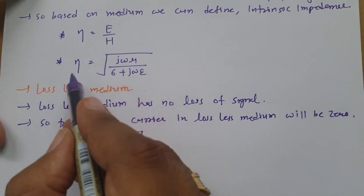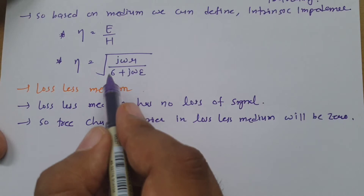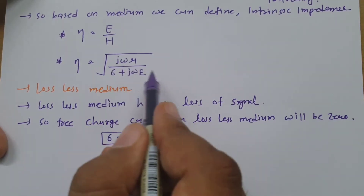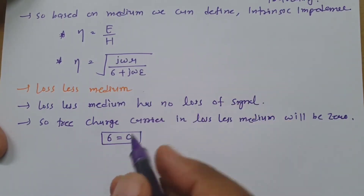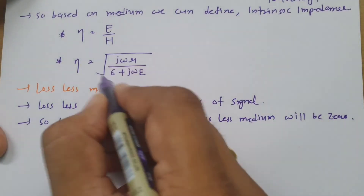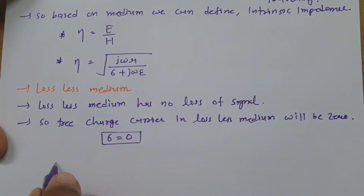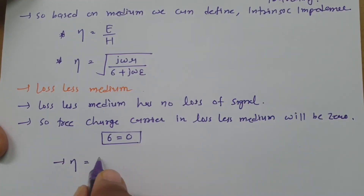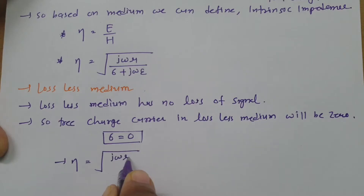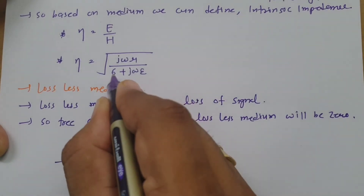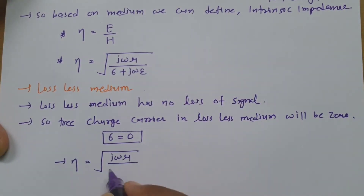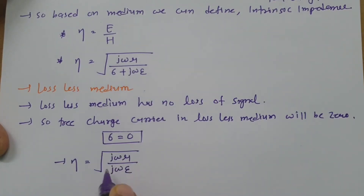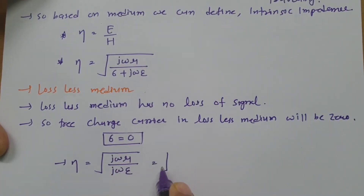Since intrinsic impedance equals the square root of j·omega·mu divided by (sigma + j·omega·epsilon), if we place sigma equal to zero, we get eta equals the square root of j·omega·mu divided by j·omega·epsilon. The j·omega terms cancel, leaving square root of mu divided by epsilon.